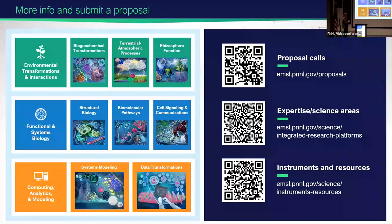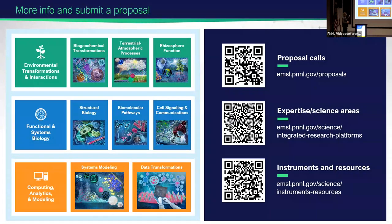More information on how to submit a proposal — you can scan this QR code for the proposal calls, the different expertise and science areas, and the instruments and resources. We have three different science tracks: environmental transformations and interactions, functional and systems biology, and computing, analytics, and modeling. We work together across all three of these science areas.